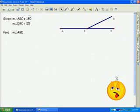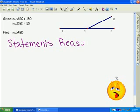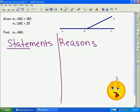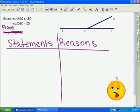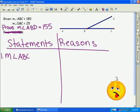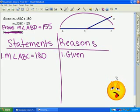Finally, last one. Two columns: statements and reasons. I'm just going to change this in your notes. Change it to prove measure of angle ABD is equal to 155. We're going to start out. First given statement: measure of angle ABC is 180. That is given. If you notice on your diagram, ABC is the largest angle. That's 180.